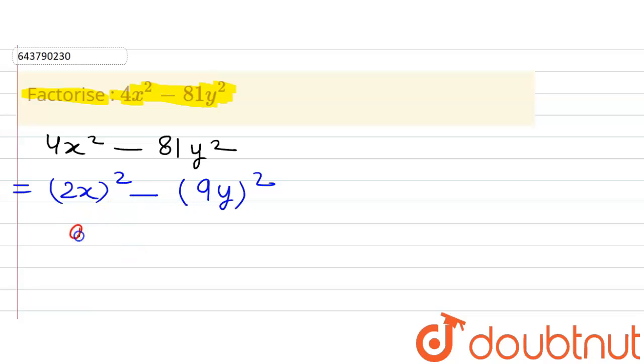Now if you observe, it is something like a square minus b square, where a is 2x and b is 9y. And a square minus b square can be written as a minus b multiplied by a plus b.